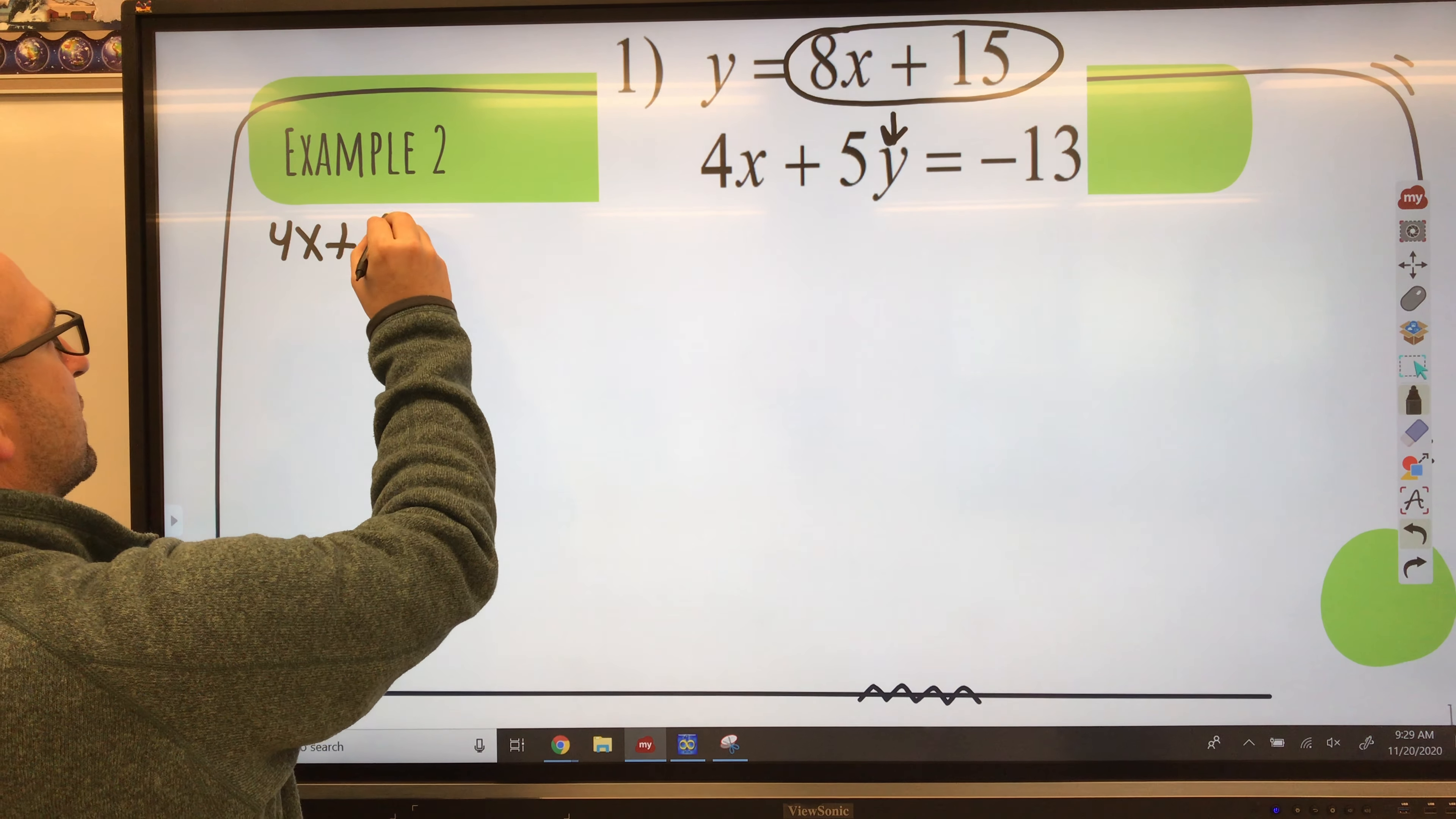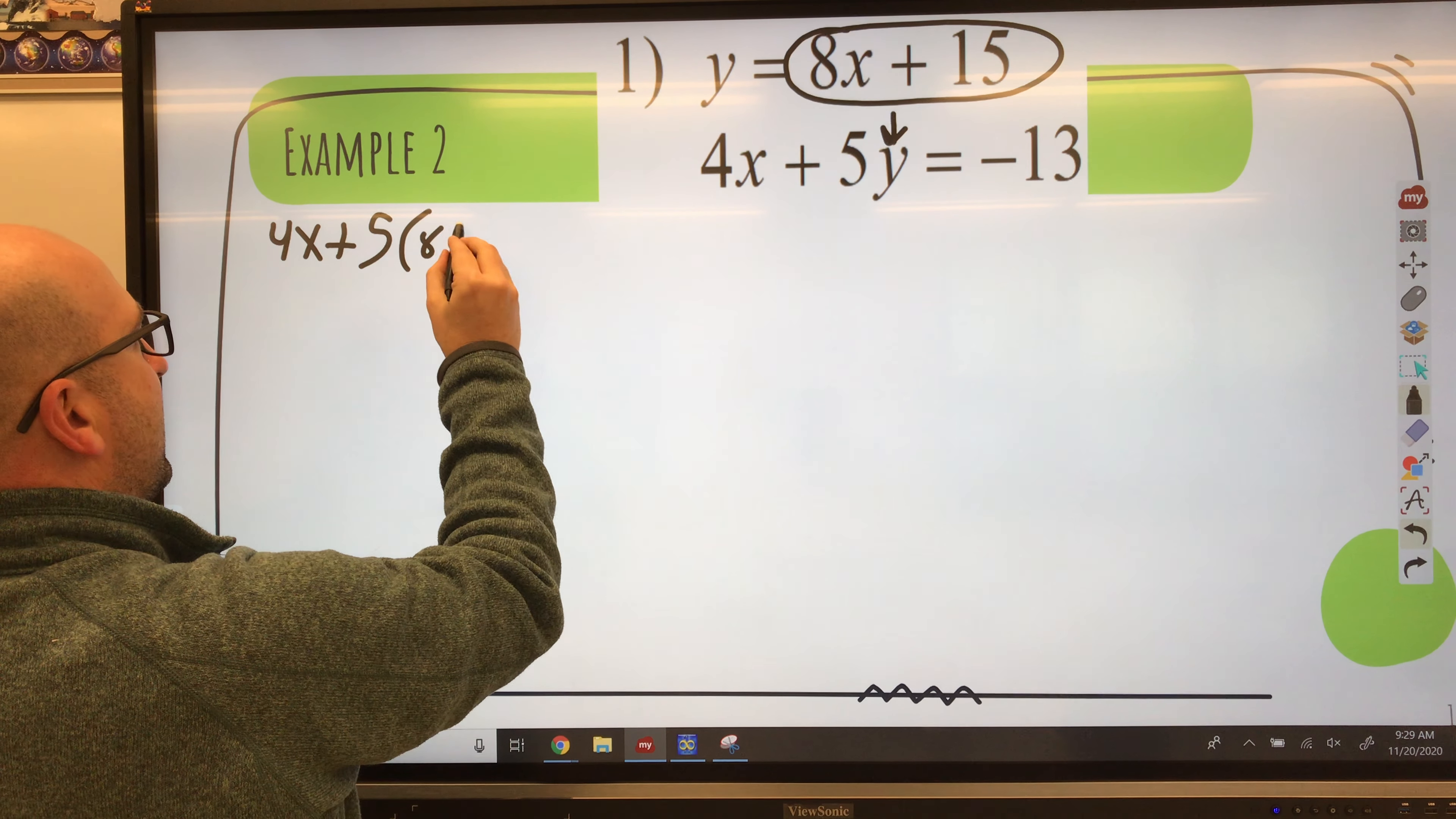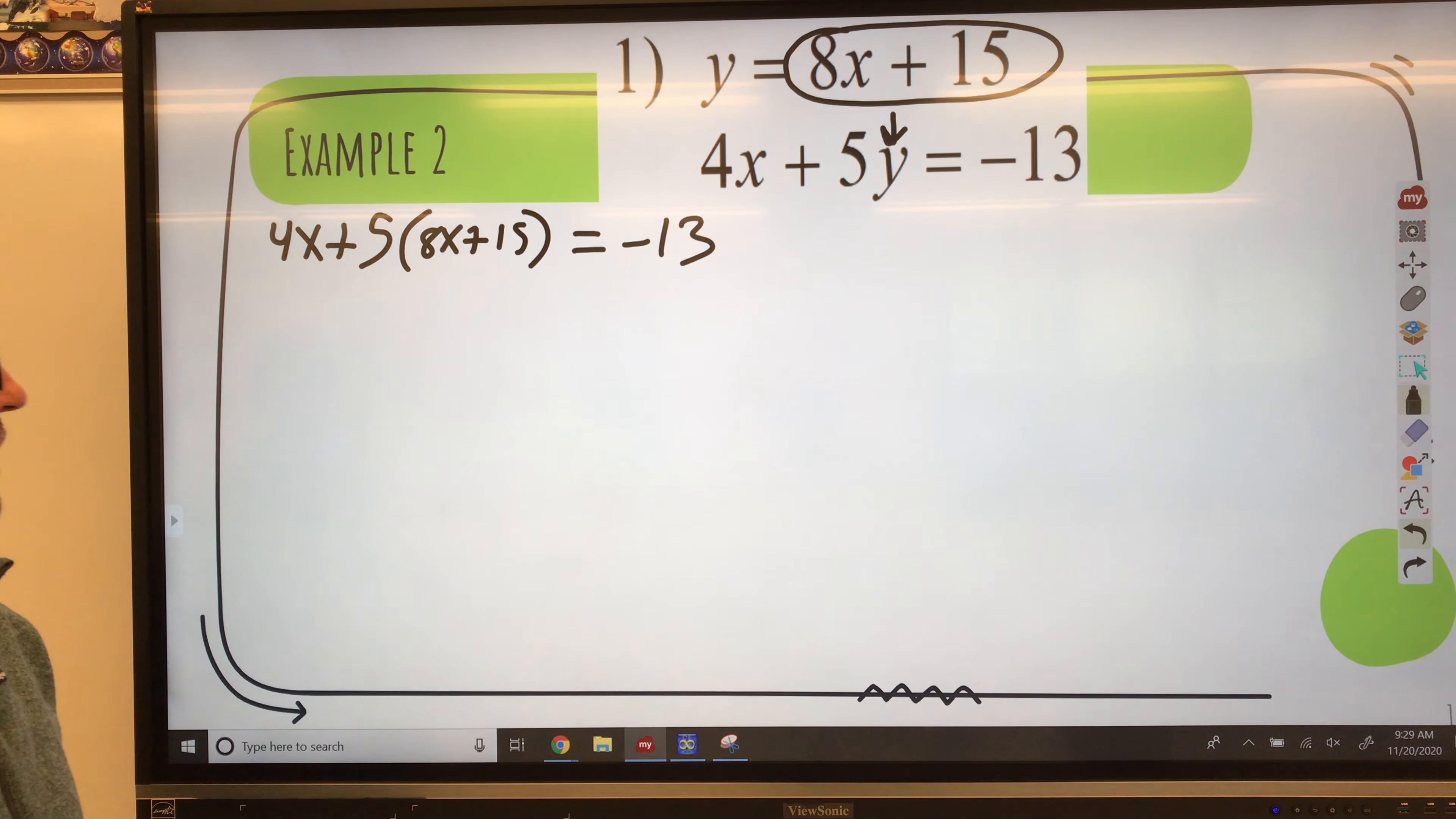So let's rewrite it out. 4x plus 5, not y. What y is equal to? Y is equal to 8x plus 15 equals negative 13.